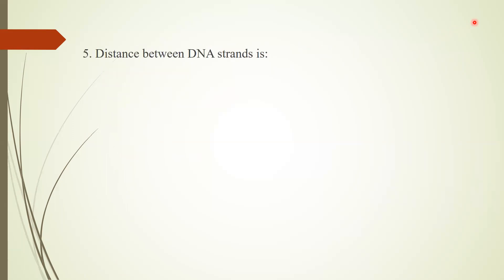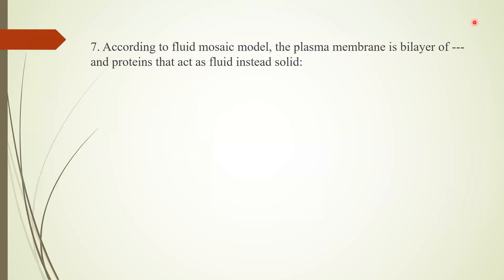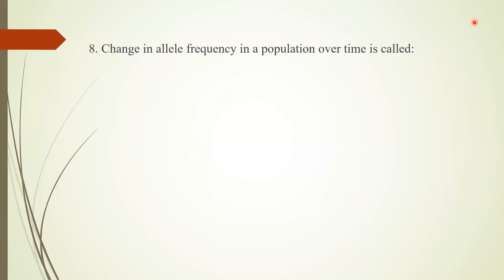Question 5: Distance between the DNA strands is two nanometers. Question 6: When a transport protein forms a channel for transport, this type of movement is called facilitated diffusion. Question 7: According to the fluid mosaic model, the plasma membrane is made of a layer of phospholipids and proteins that act as a fluid instead of a solid. Answer: phospholipid.